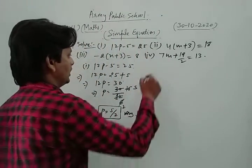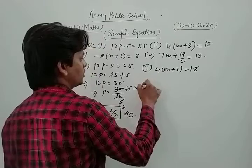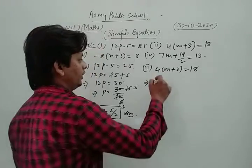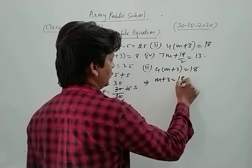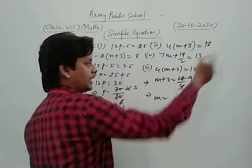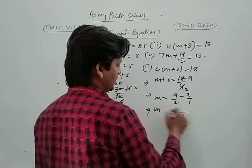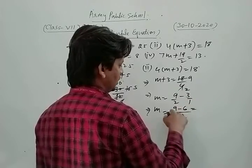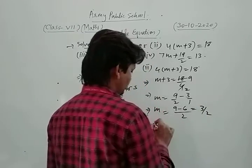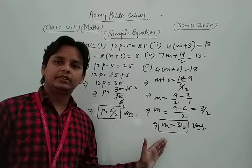We take and solve the second part: 4 into bracket m plus 3 is equal to 18. We transfer 4 to that side, so m plus 3 is equal to 18 upon 4, which is 9 by 2. Then we separate the constant: m is equal to 9 by 2 minus 3. Taking 2 as the LCM, we get m is equal to 9 minus 6 over 2, which is 3 by 2. This is the required solution.